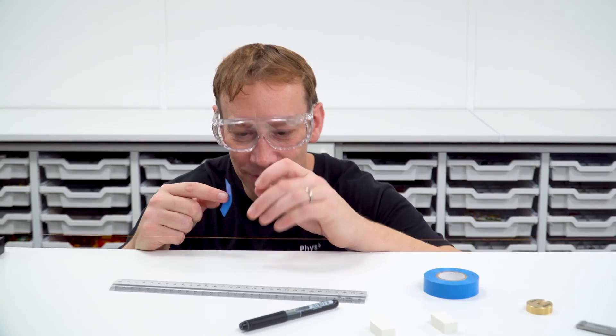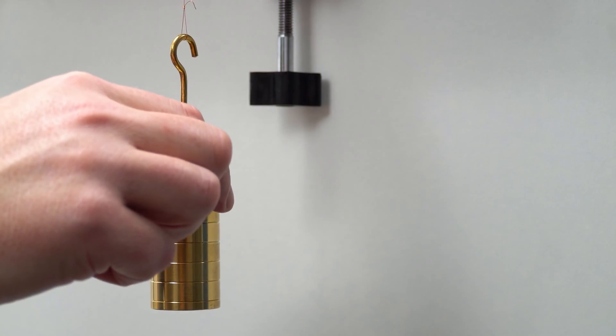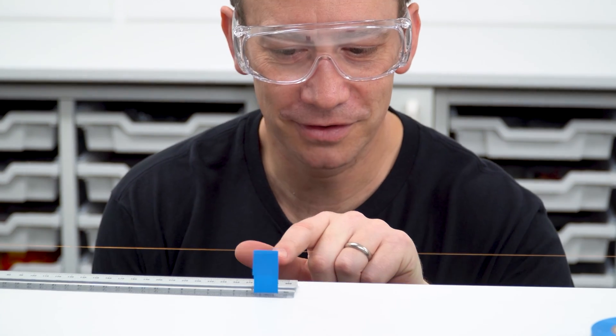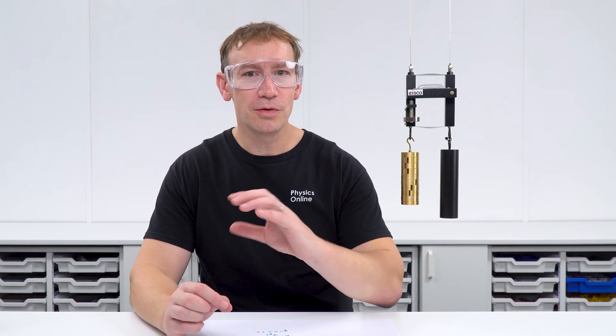Now the simplest way to measure the Young Modulus is to have a horizontal piece of wire, you load the end and then you look at the extension and you might measure that with a ruler. The difficulty with that method though is that you can only really measure to the nearest millimetre which means you have quite a high absolute uncertainty and the extensions of the wires are quite small even when they're heavily loaded.